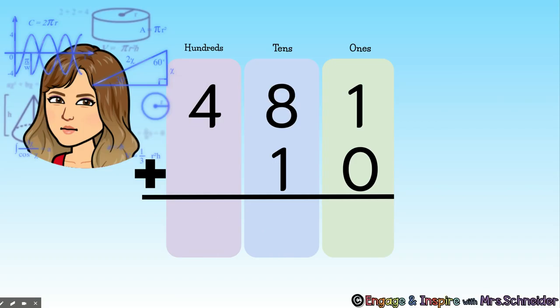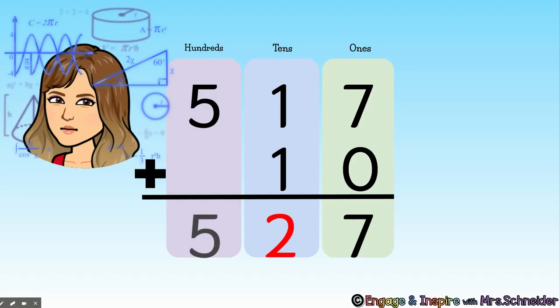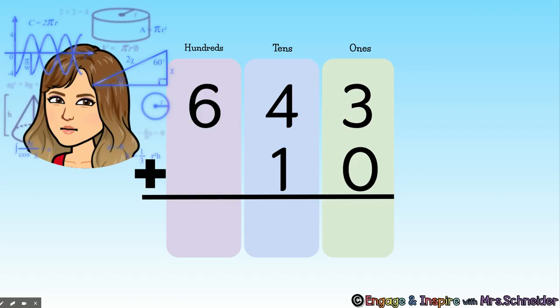481 plus 10, 491. 517 plus 10, 527. 643 plus 10, 653.